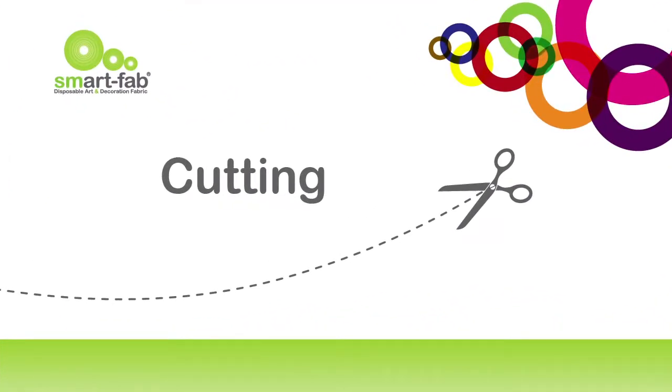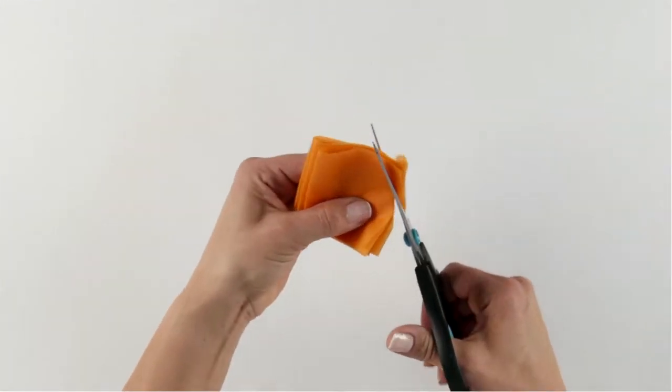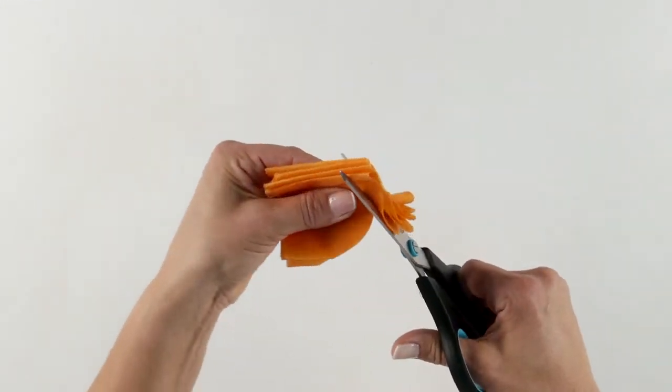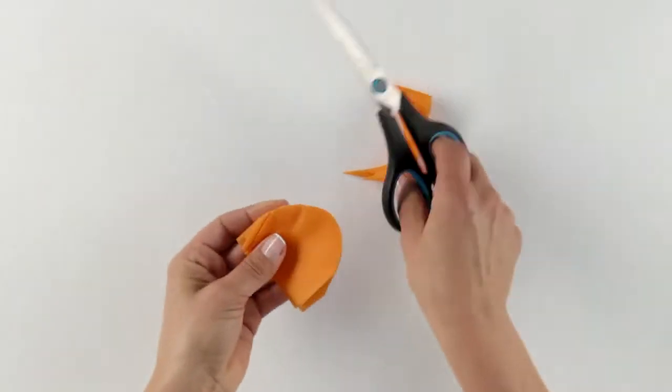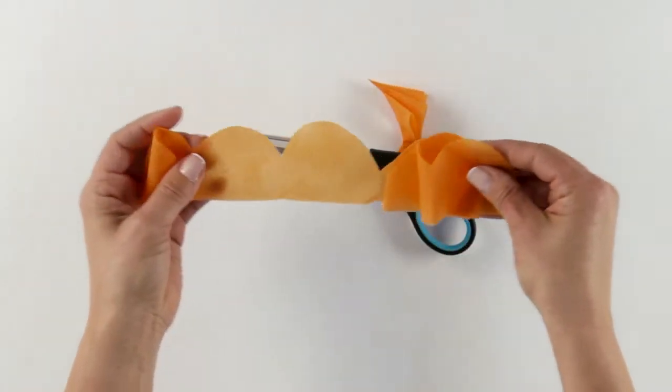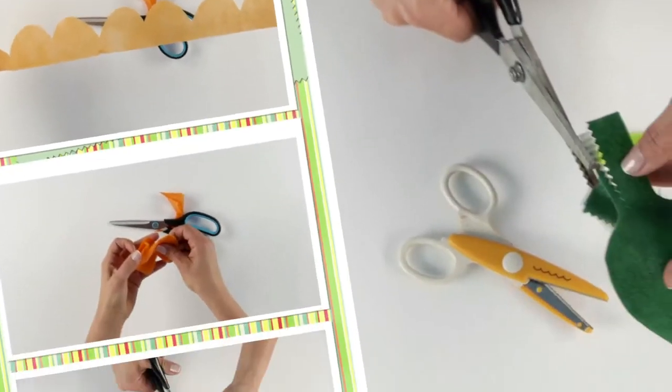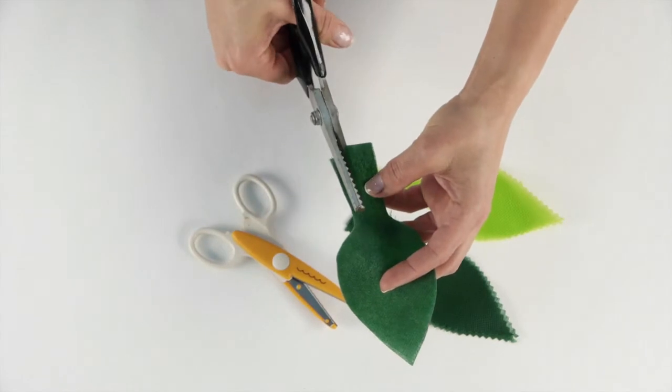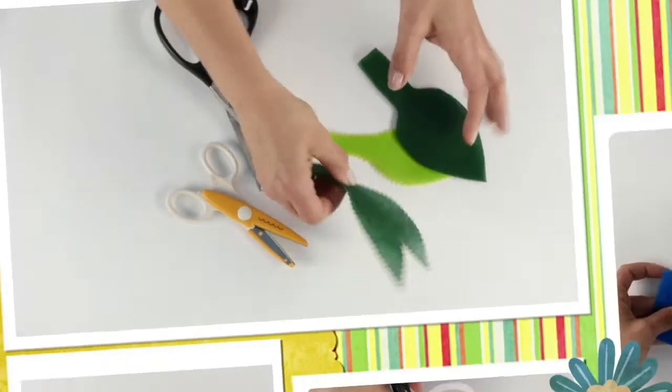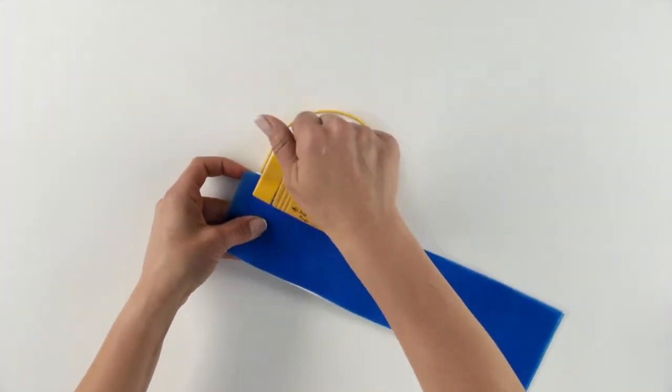Cutting and Trimming. SmartFab is a non-woven fabric, so it won't fray. You can cut and trim it with scissors, pinking shears, cutting knives, paper punches and die cutting machines.